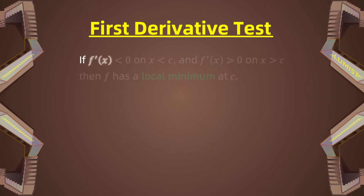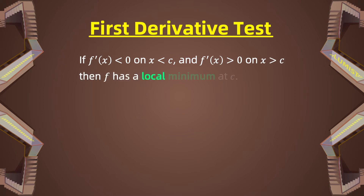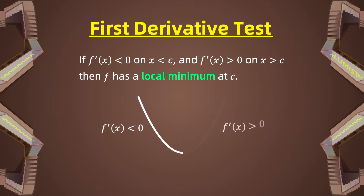And if f'(x) is less than 0 on x less than c, and f'(x) is greater than 0 on x greater than c, then f has a local minimum at the point c. As you see on the graph, f'(x) is negative before and positive after, and at the point where f'(x) equals 0, we have a local minimum.